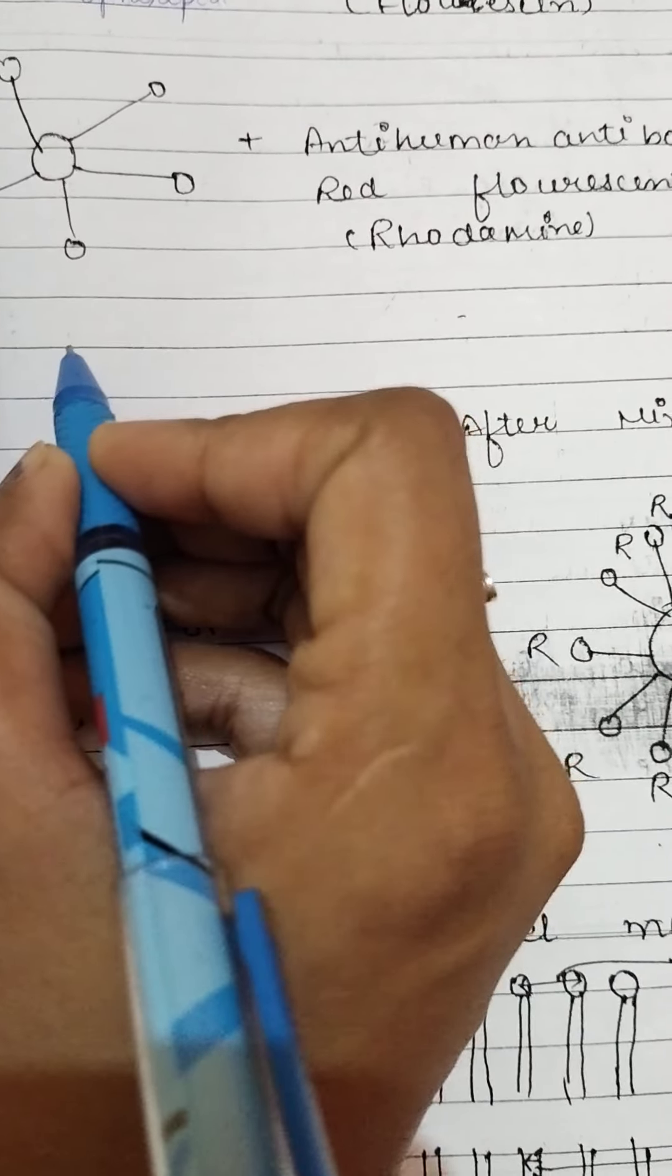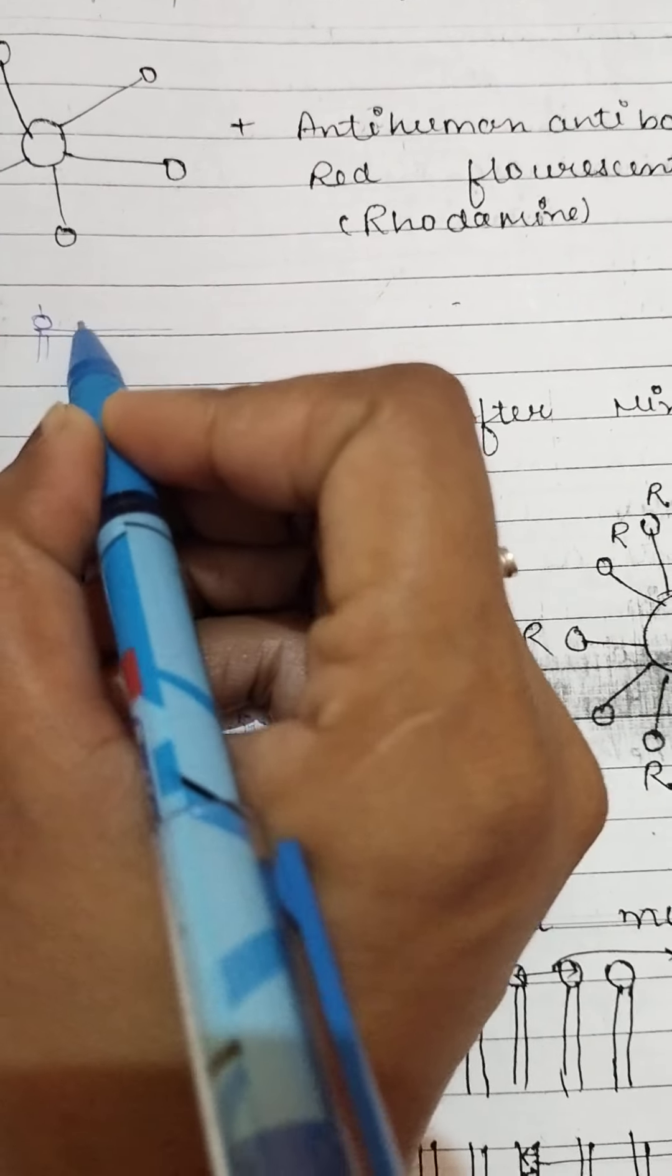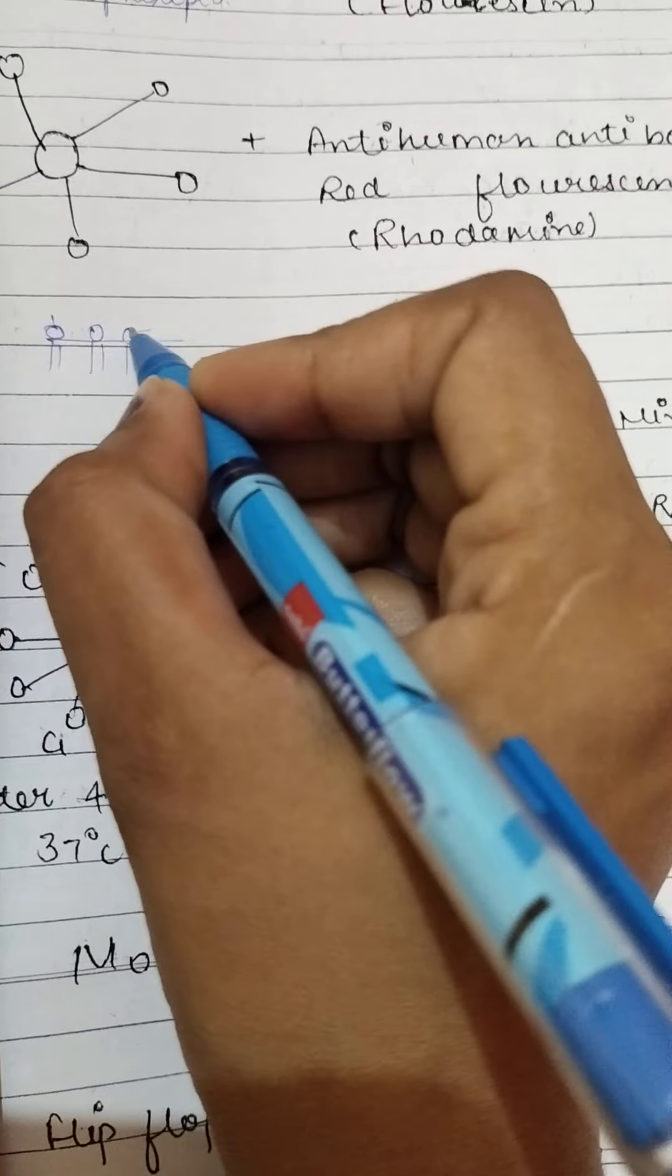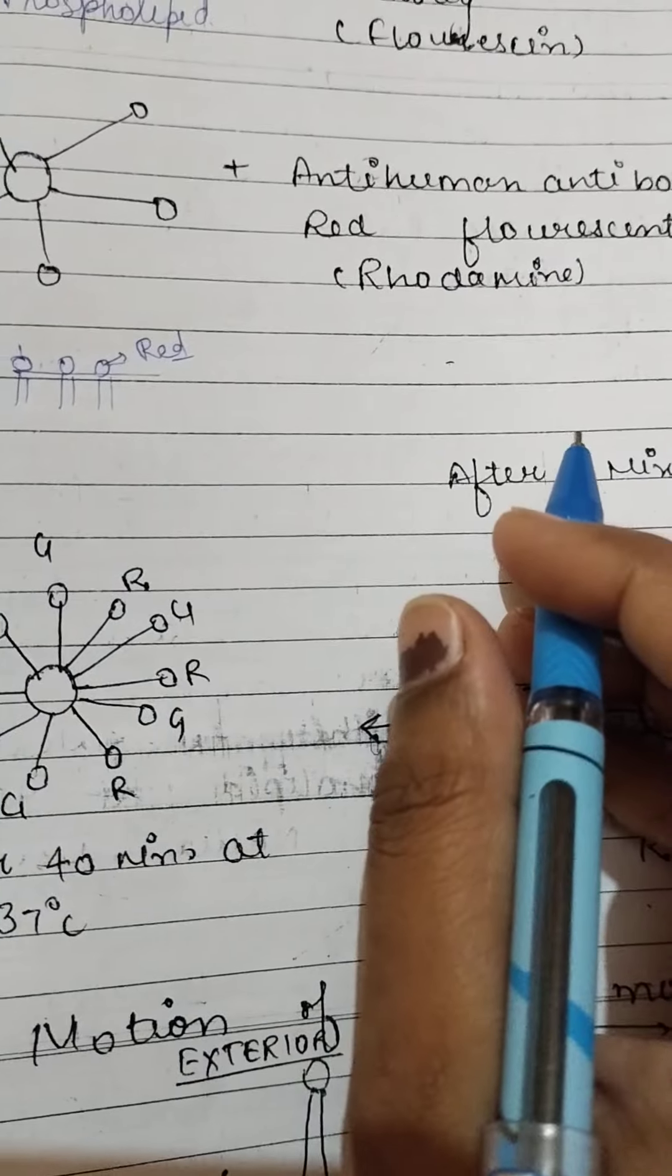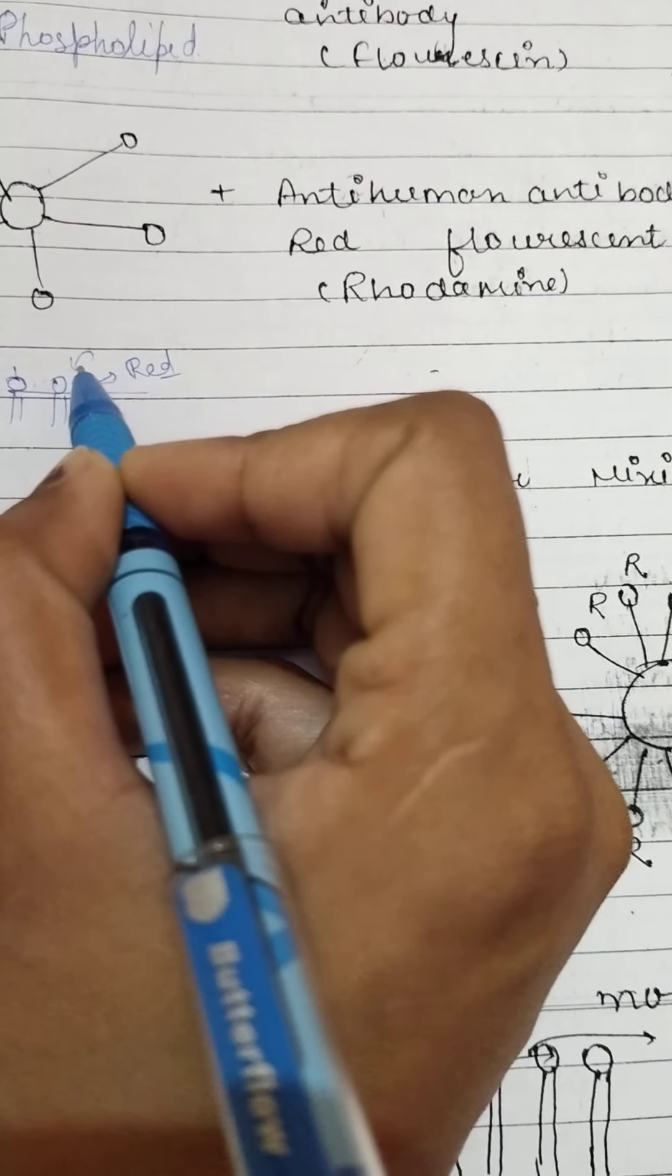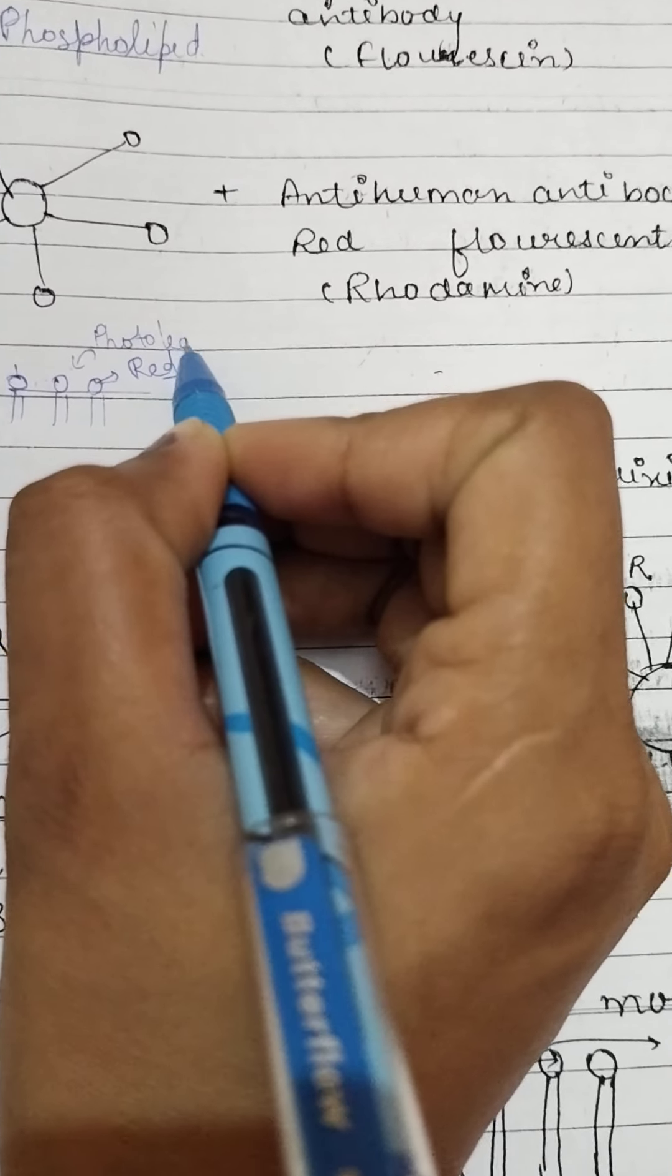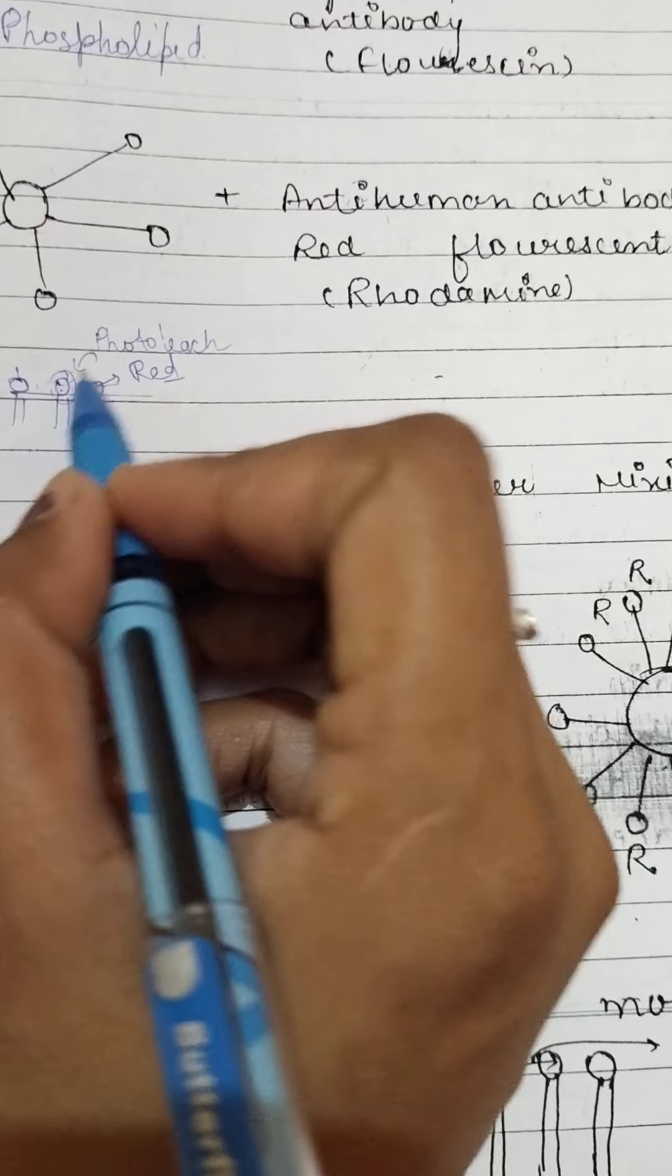One more experiment: you can see phospholipids. You can see red color. After that, you can see photobleaching light.